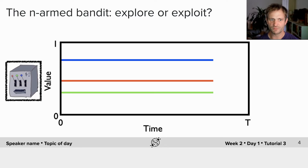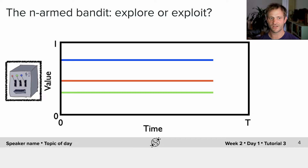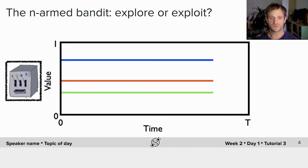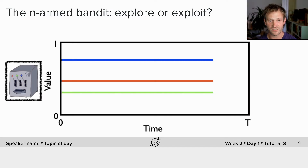If we choose the blue arm, we get more value every time we take that action. If we choose the green arm, we get less value. If we choose the red arm, we get something in between. But if we just chose once and then decided, we wouldn't know which is best. If we were to explore, we could try all the arms and figure out which one is best. If these payoffs are slightly noisy, so we don't always get exactly the average value, this question becomes even harder.